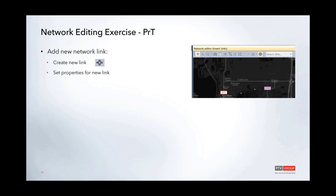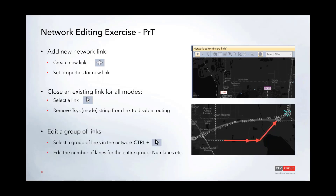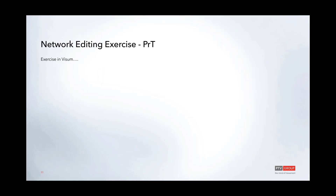In this network editing exercise, we'll modify properties of a link by creating a new link and setting properties for it, then close an existing link for all modes. We'll look at the impact of changing and removing transport systems on a link. We'll also look at editing a group of links — for example, modifying an entire corridor and examining that workflow.